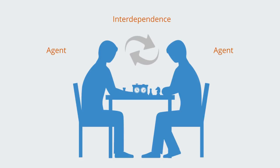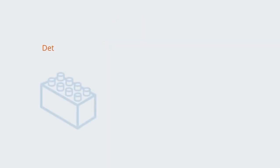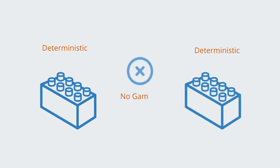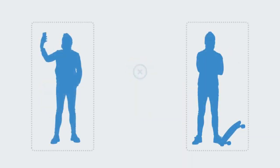Without either of these elements — agents or interdependence — we do not have a game. If the elements did not have agency and the capacity for adaptation, they would have no choices and we would have a deterministic system. Likewise, if they were not interdependent, they would not form some combined organization, and we would study them in isolation — in which case, again, we would not have a game.